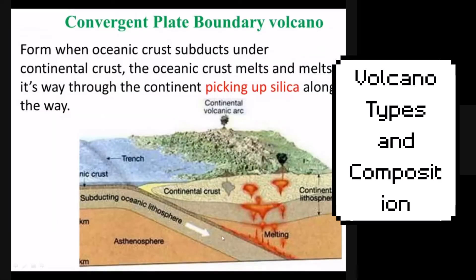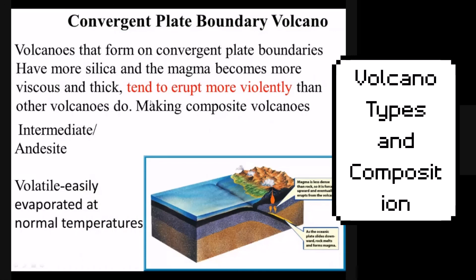For convergent plate boundaries, it's a little different. The magma must rise up through the crust as well as the mantle. As the oceanic plate sinks into the mantle, it heats up, melts, and rises up through the continental crust. As it does, it picks up silica along the way, becoming thicker and more viscous. This makes it more likely to plug up the volcano and allow pressure to build up. So instead of being pure basaltic or mafic rock, it becomes more intermediate in composition. Intermediate volcanoes tend to erupt more violently because their viscous magma is more likely to be plugged at the surface, resulting in explosive ash or lava eruptions.